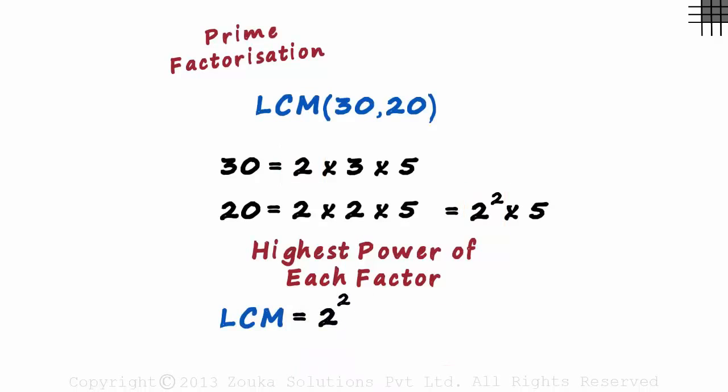The next factor is 3. Did you notice, 3 exists in 30 but not in 20. So we just write down this 3 here.